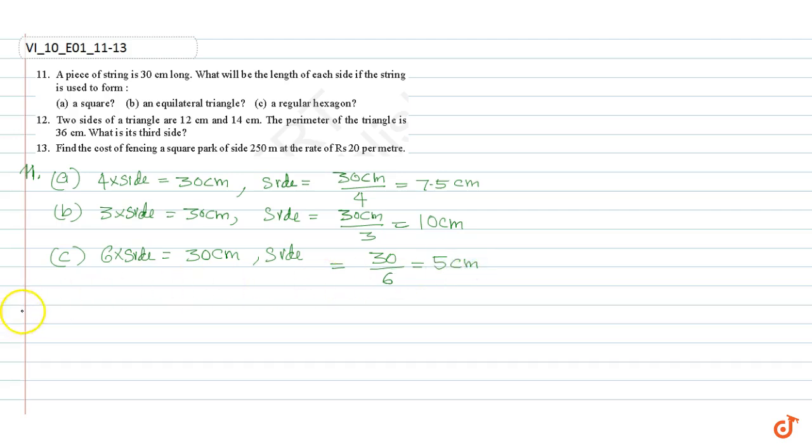Question number 12. Two sides of a triangle are 12 cm and 14 cm. The perimeter of the triangle is 36 cm. What is its third side?